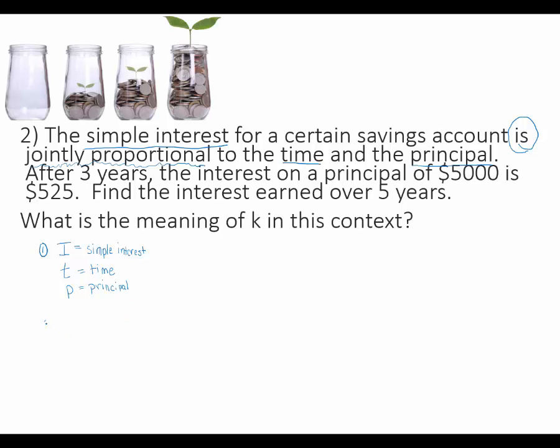My second step is then to take these variables and put them together in an equation that shows the relationship between them. Since the subject of the sentence was interest, interest will come first. The next part of the sentence is my verb, which I have circled up here as 'is'. The 'is' is the equal sign.